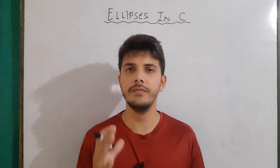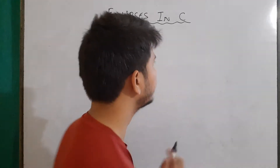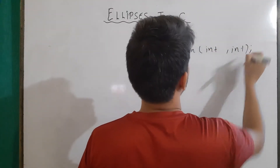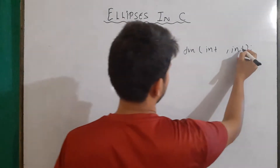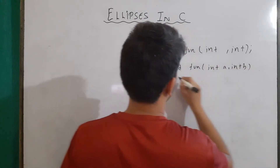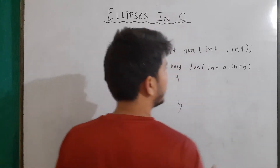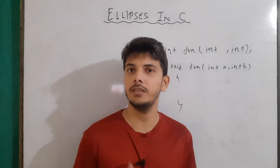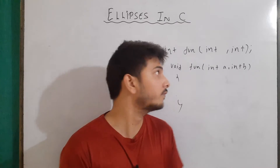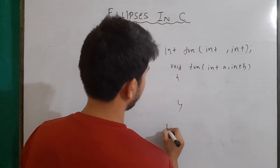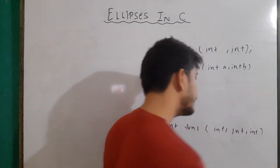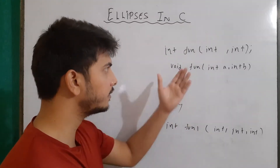In a normal case scenario, we always have a definite number of arguments. For example, when we write the prototype, we generally write int fun, then int and int — meaning only two arguments will be used. In the definition also, we write void fun with int a and int b. But if in the same function I want to send three, four, or five arguments, one thing we can do is make different functions for different numbers of arguments — for example, one function for two values, another for three, another for four or five. But this is not a good approach.